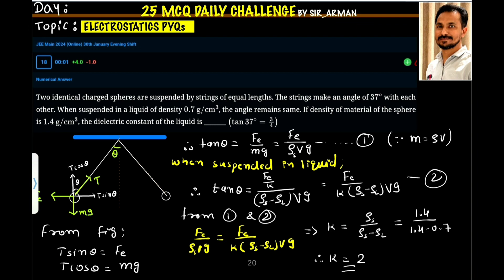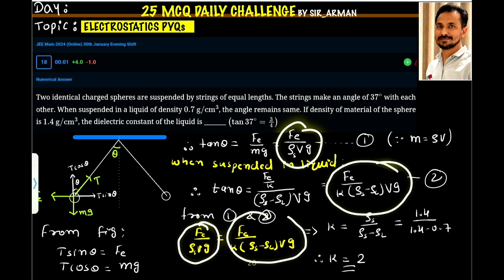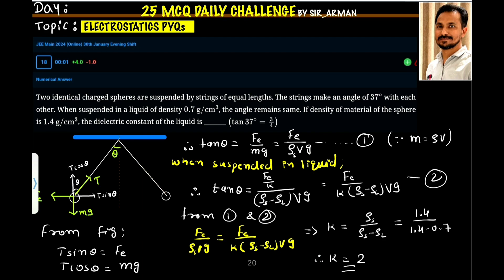In both cases, it is given that the angle is the same, so tan theta equals tan theta. We can put these two equations on either side. On one side, we have Fe by rho s vg, and on the other side, we have Fe by K rho s minus rho l vg.